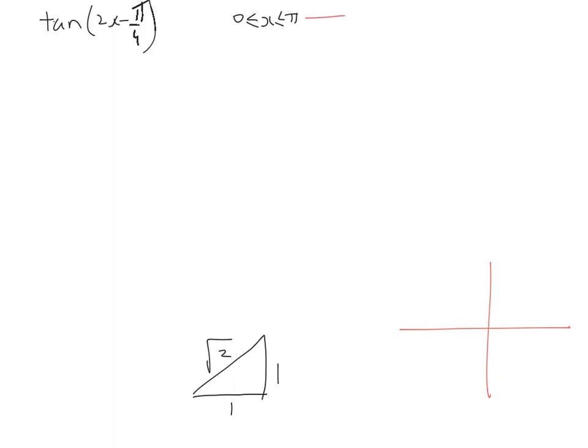This will then become, we multiply both boundaries by 2, so we have 0, 2x, 2π.